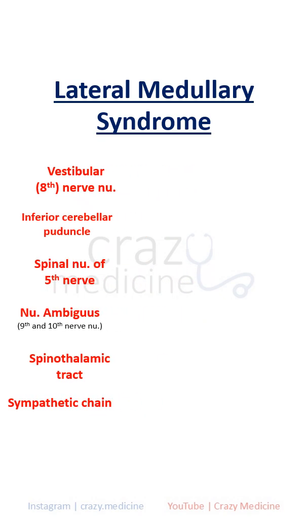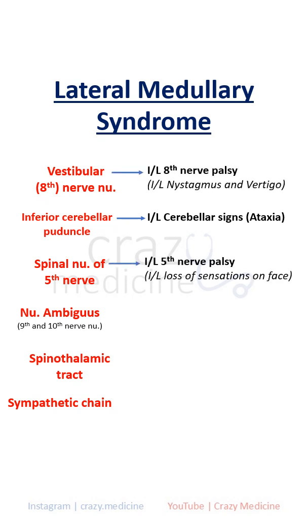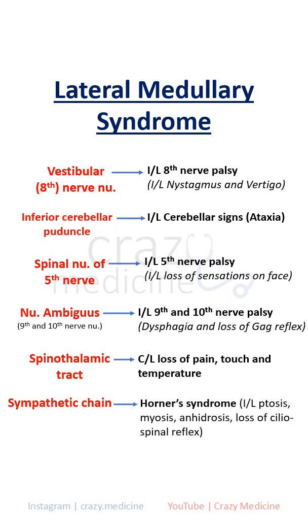So clinically, you get ipsilateral ataxia from cerebellar involvement, ipsilateral 8th nerve symptoms, ipsilateral 5th nerve palsy, ipsilateral 9th and 10th nerve palsy causing dysphagia and hoarseness, contralateral loss of pain and temperature, and Horner's syndrome.